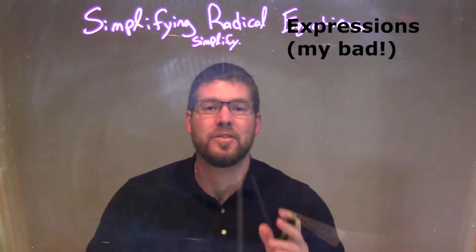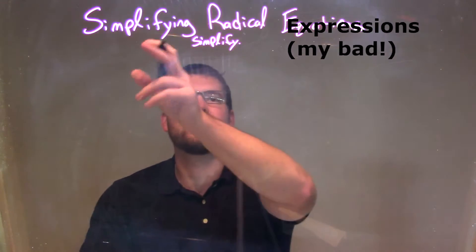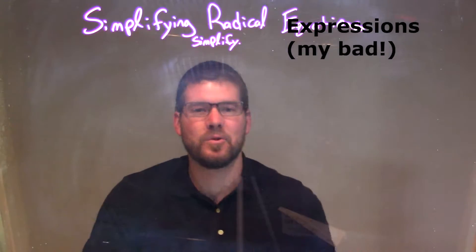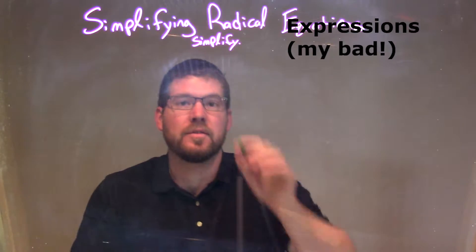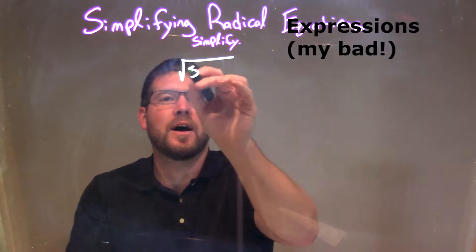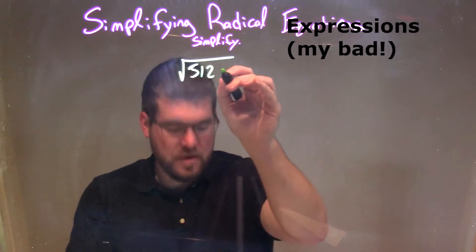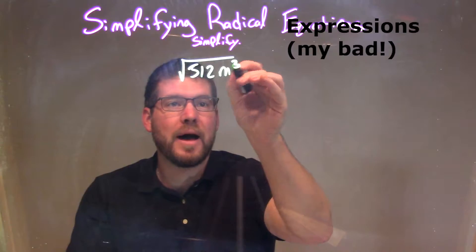Hi, I'm Sean Gannon, and this is MinuteMath. Today we're going to learn about simplifying radical equations. So if I was given this to simplify: the square root of 512 m to the third power.